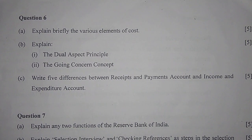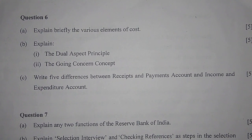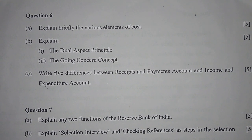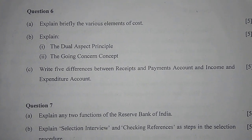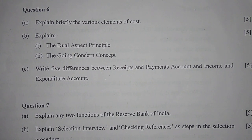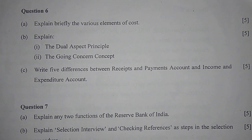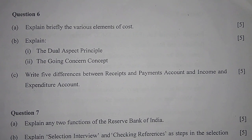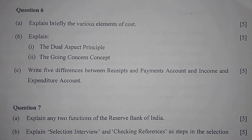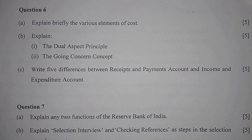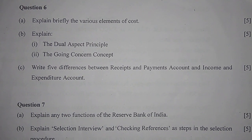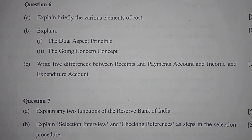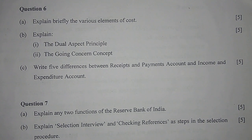Question 6a: Explain briefly the various elements of cost. There are three basic elements of cost: material cost, labor cost, and expenses. Material cost refers to the cost of the substance from which the product is made. There are two categories: direct material, which forms part of the final product, and indirect material, which is not directly assigned to the finished good.